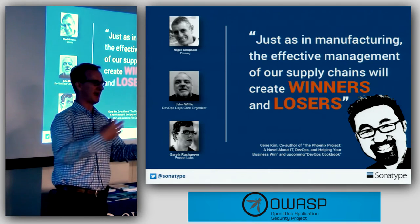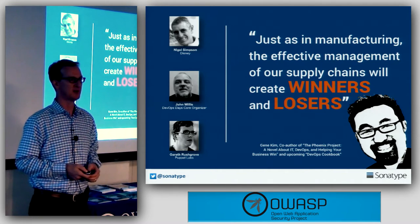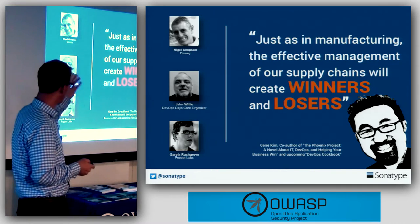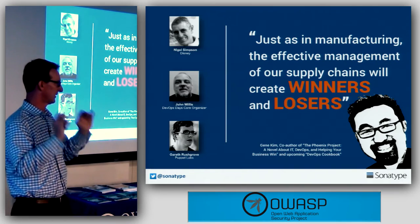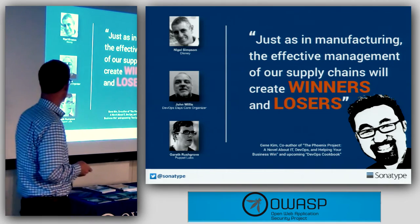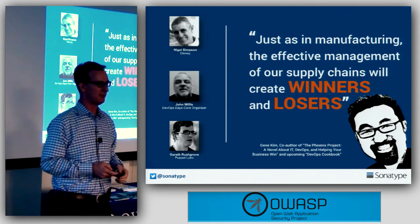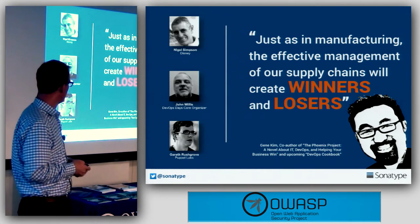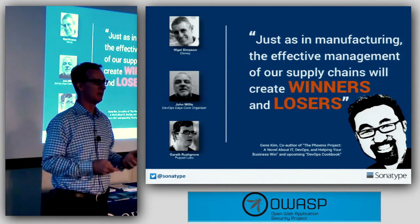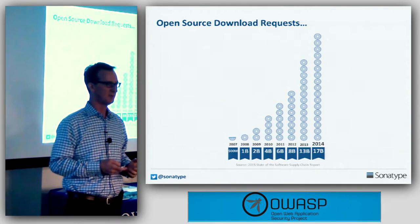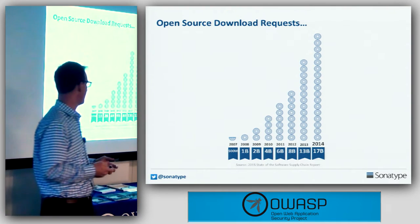Moving from waterfall to agile to continuous DevOps practices is creating winners and losers in software development. Gene Kim, who wrote The Phoenix Project — get it on Amazon or Kindle — covers this well. People like Nigel Simpson at Disney, John Willis at Docker, and Gareth Rushgrove at Puppet Labs helped review my research, saying we need to better recognize how we develop software in these supply chains, understand the benefits and risks, and make practices more efficient.